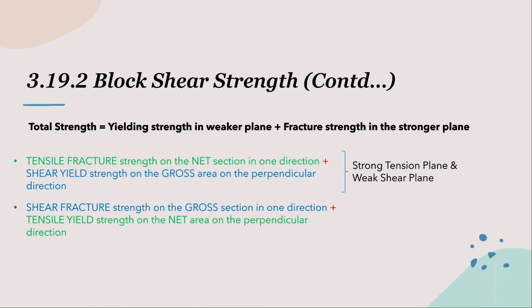The next equation reads: shear fracture on the cross section in one direction, plus tensile yield strength on the net area in the perpendicular direction. The tension plane yields and the shear plane fractures, meaning block shear occurred after the shear plane fractured. So the shear plane is the stronger plane and the tensile plane is the weaker plane. After computing block shear strength for both conditions, the minimum of both is the governing block shear strength of the section.